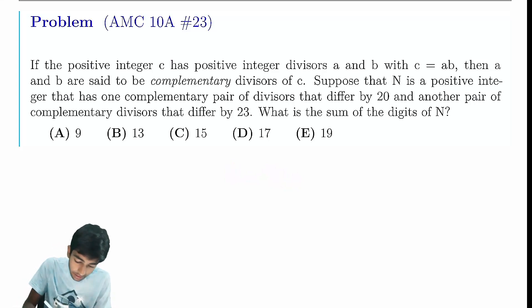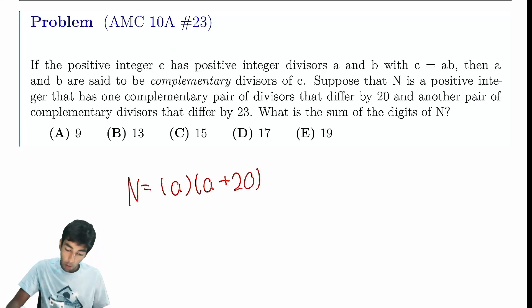Suppose N is a positive integer. N has a complementary pair that differ by 20. Let's call it A, because we already have an N here, so I don't want to get confused there. So we have A times A plus 20 equals N. That's the complementary pair of divisors that differ by 20. And another pair differ by 23. We can also say it's B times B plus 23.